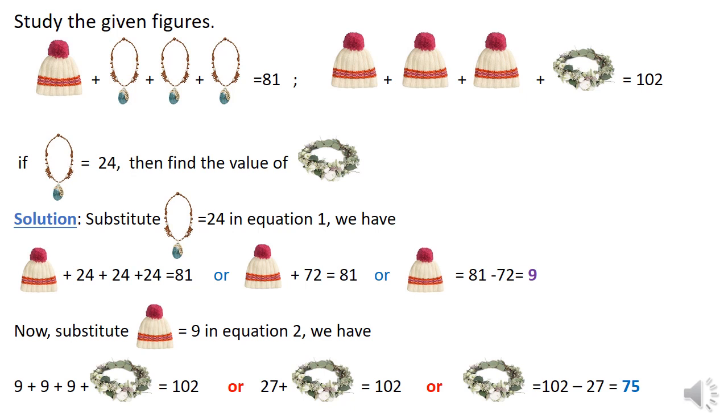Now substitute the value of cap equal to 9 in equation 2. We have 9 plus 9 plus 9 plus hairband equal to 102, or 27 plus hairband equal to 102, or hairband equal to 102 minus 27 equal to 75.